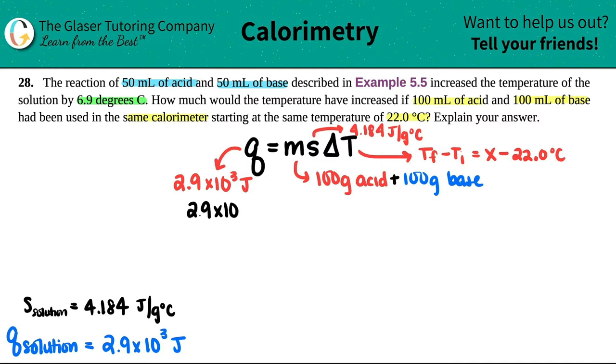So let's write out our formula with the numbers in it. 2.9 × 10³ - I don't usually write the units when I'm doing the math because I know that I have all the right units. So this is equal to 200 (100 plus 100 is 200) times 4.184, and then now I'm going to do X minus the 22.0. Multiply these two numbers together, so I'm going to do 200 times 4.184. 4.184 times 200, I get 836.8.